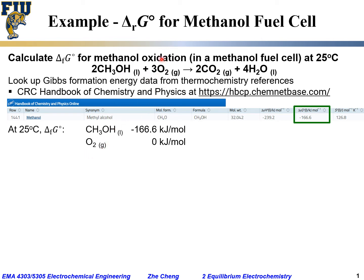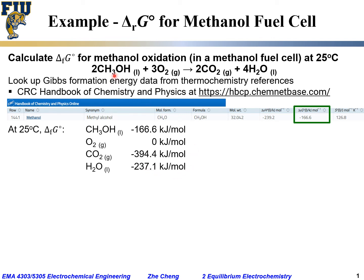For oxygen gas, the standard Gibbs formation energy is zero kJ/mol, because the standard pure element reference state is also oxygen gas — no change, so zero. For CO₂ gas at 25°C, the value is minus 394.4 kJ/mol. Similarly, for liquid water, the value is minus 237.1 kJ/mol.